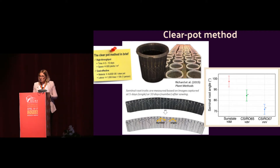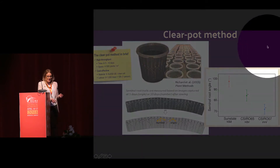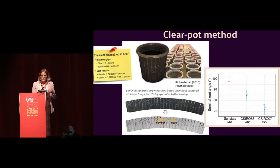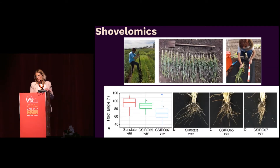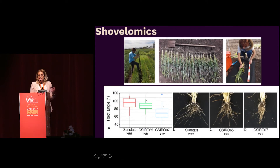We used the clear pot method for these near-isogenic lines because we could have a very high number of replicates and do it very quickly. The results show that as the near-isogenic line becomes more winter — as it gains more winter alleles — it actually gets narrower. There is a significant difference with the addition of each winter allele. We saw the same results in field analysis using shovelomics to look at the mature root system: as you increase the number of winter alleles, you narrow the root system architecture.